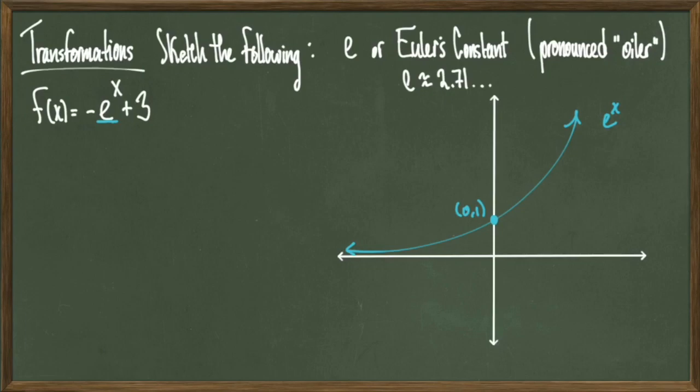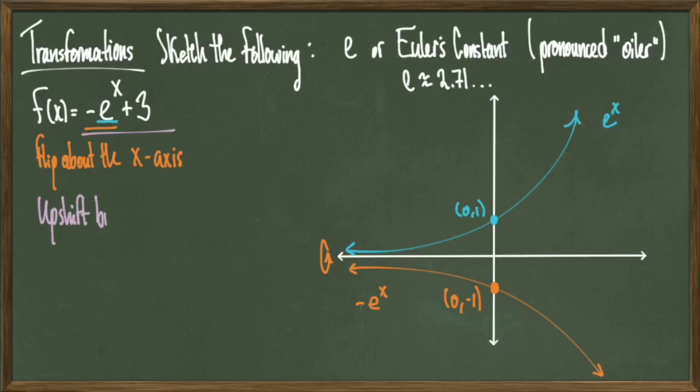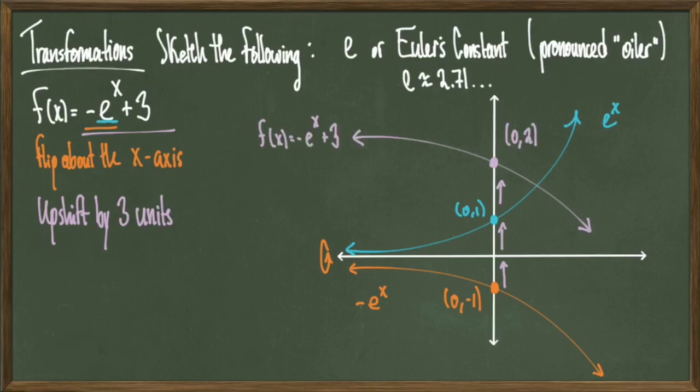The next thing to take care of is this negative sign in front of e. Remember that a negative is a flip about the x-axis, which we can draw like so. The reason that it's a flip about the x-axis is because you're taking all of the outputs and changing the signs by multiplying by -1. That's why you flip the graph this way. The next transformation that takes place is an upward shift by 3 units. That's where this +3 comes in. So I will move the entire graph up by 3 units, and it will be drawn like this.